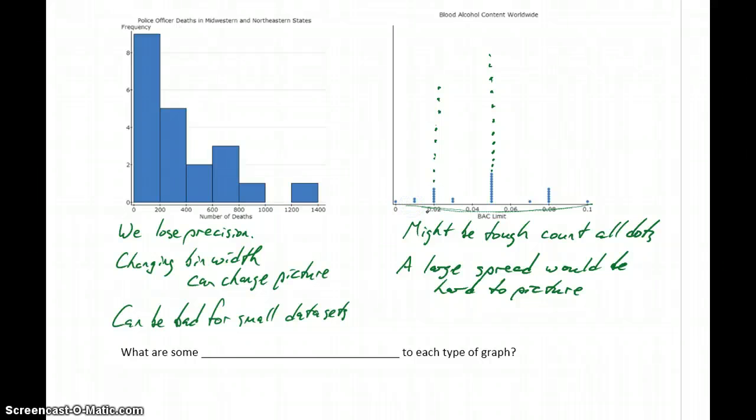When our data values are close together, like from 0 to 0.1, a dot plot can be great. But if there's a lot of spread in our data, it might not be a very good tool.